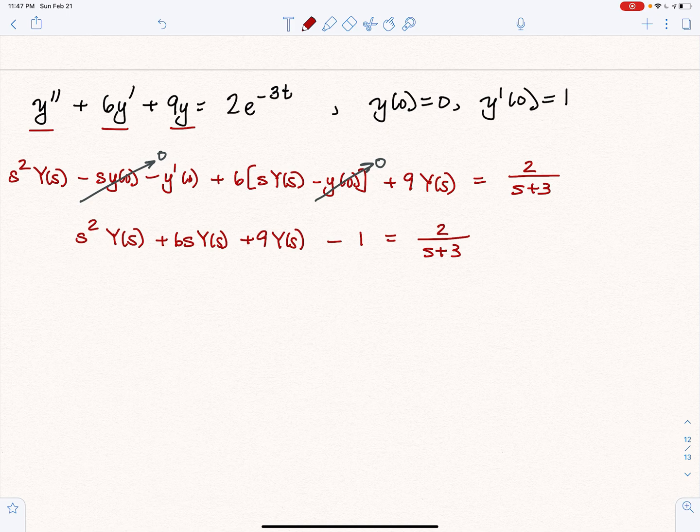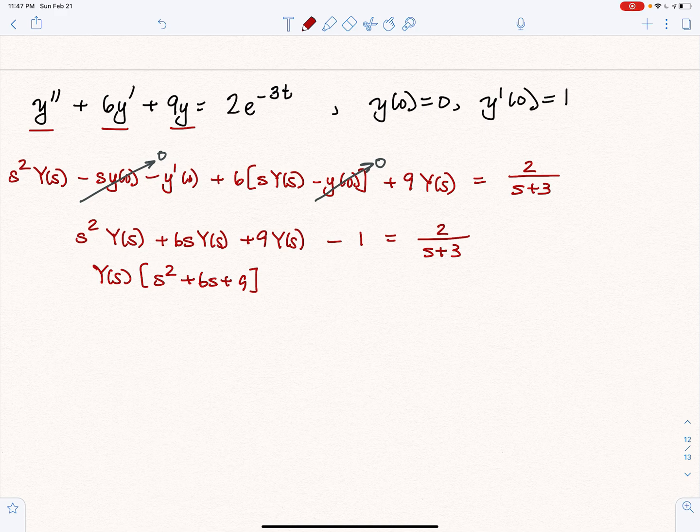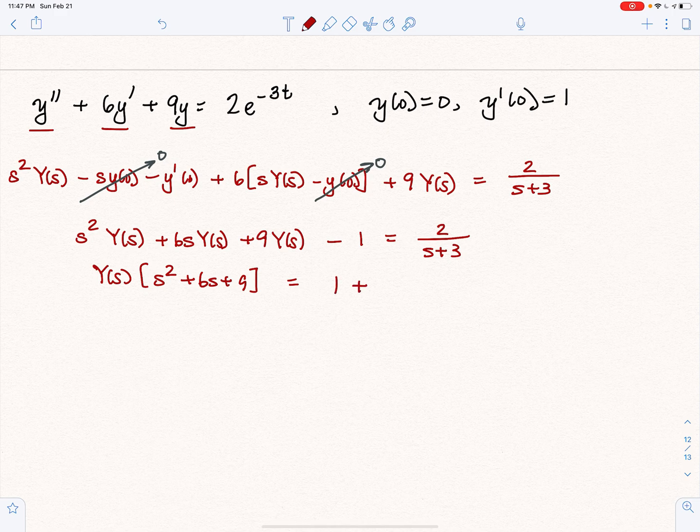Now, this is interesting. If we factor out a Y of S, it's multiplied by S squared plus 6S plus 9, which you notice was more or less the differential equation up above, except we replaced primes with powers. Where have we seen that before? This equals 1 plus 2 over S plus 3.